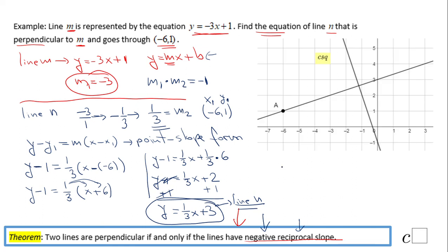But first, I want you to take a look at a graphical approach. This is line N in the slope-intercept form. This was line M and this is line N, the one we found.